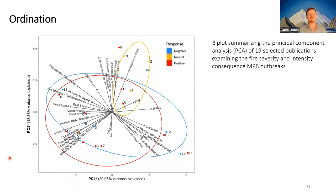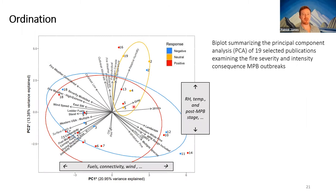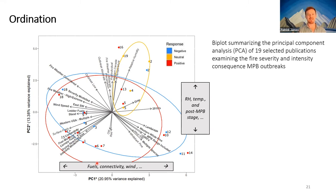As a community ecologist at heart I was visualizing this as an ordination-type multivariate analysis problem — throw the table of papers and classifiers into an ordination and my hypothesis would be that we get nice clusters of red, blue, and yellow sites. That's not what we found. We found a little distinction for the neutral studies, which came out somewhat on their own. But there was significant overlap between the positive and negative distributions — the ordination space was loosely broken up with the first axis based on fuels, winds, and connectivity, and the second on relative humidity, temperature, and post-mountain pine beetle stage.